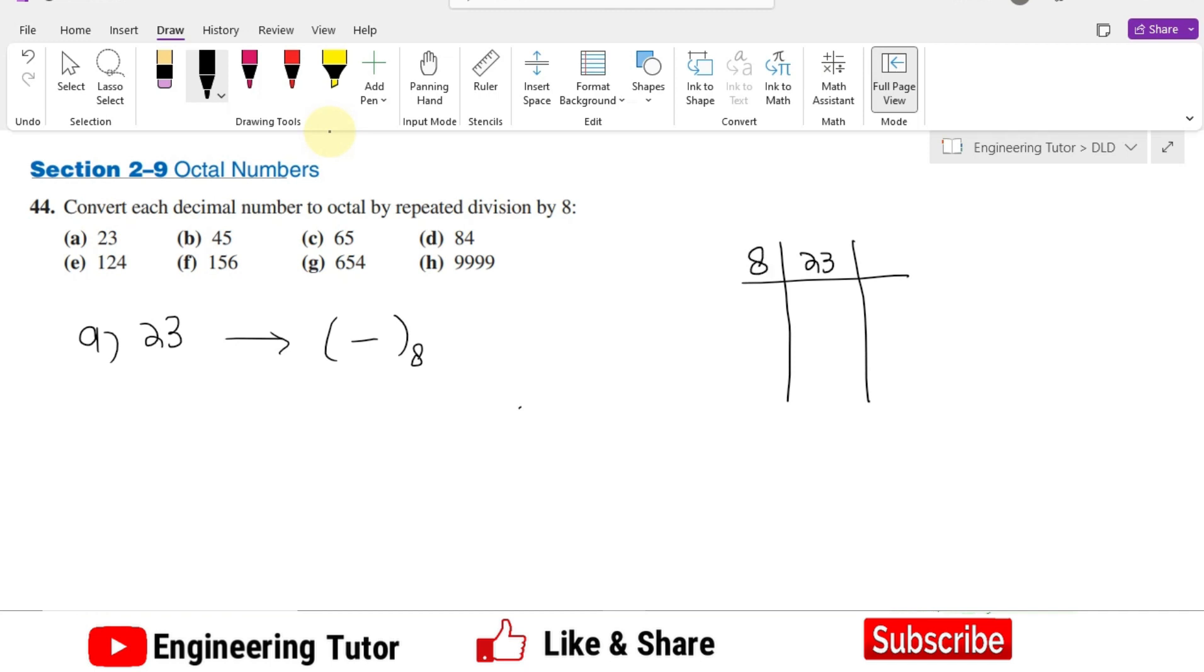Dividing it by 8, I will make it 8 times 2 is 16. The difference between 23 and 16 is 7. That's it because now this 2 cannot be further divided and I have got 27.